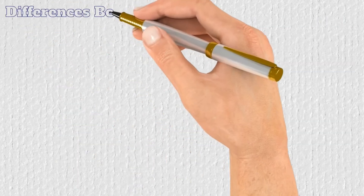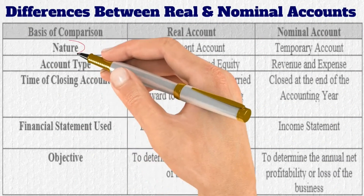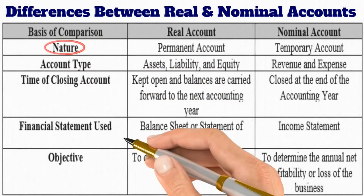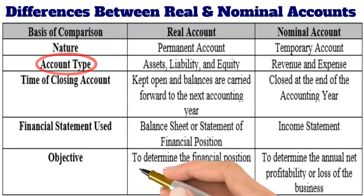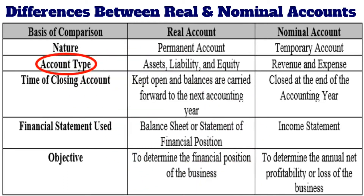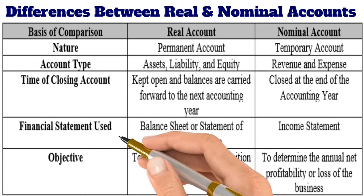Now let me summarize today's discussion. The main differences between real and nominal accounts are: first, in terms of nature, a real account is considered a permanent account whereas a nominal account is considered a temporary account. In terms of accounting type, assets, liabilities, and equity accounts are considered real accounts, whereas revenues and expenses are considered nominal accounts.